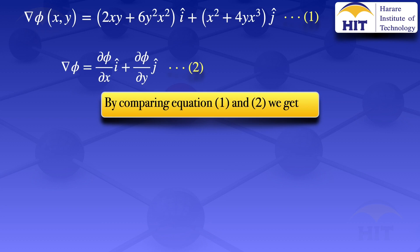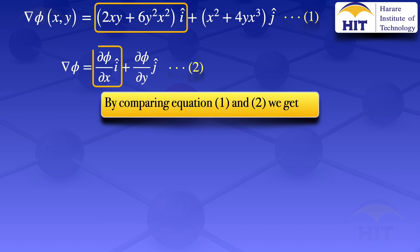Since grad φ is on the left-hand side, what will be on the right-hand side should also be the same for the two equations. Looking at the i-component, we have 2xy + 6y²x². For those parts to be equal, we get that ∂φ/∂x = 2xy + 6y²x².